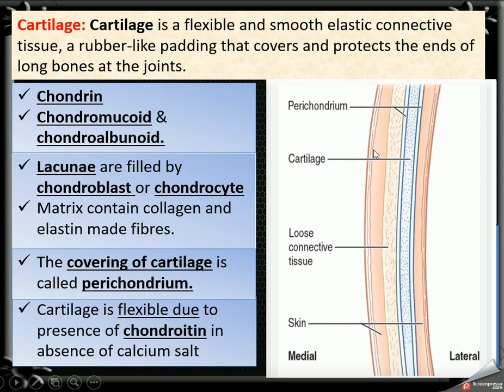Cartilage is flexible due to the presence of chondroitin and the absence of calcium salt. In bones, calcium salts are present, making bones hard. But in cartilage, there are no calcium salts — chondroitin is present instead, making it flexible.